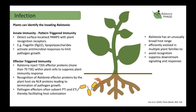Ralstonia can also inject type 3 secretion system effector proteins to further suppress plant immunity. The plant can recognise these effector proteins and trigger effector-triggered immunity to reduce pathogen growth. However, Ralstonia produces even more effector proteins to suppress or subvert these immunity responses, further facilitating host colonisation. Ralstonia has around 70 identified effector proteins, which is very high — the average is around 40 — likely due to its large host range.